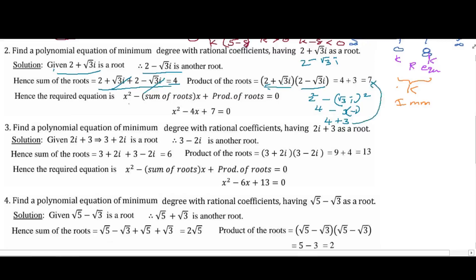The quadratic equation is: x squared minus (sum of roots) times x plus (product of roots) equals 0. We will substitute this — this is our required equation and this is our sum.